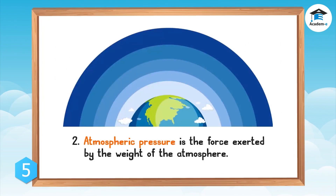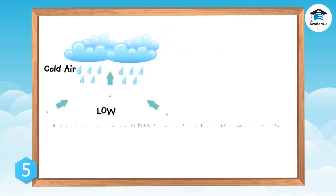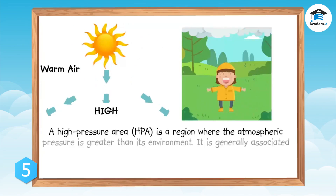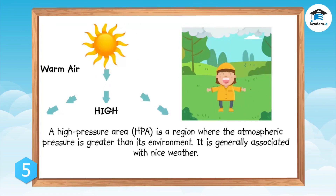Atmospheric pressure is the force exerted by the weight of the atmosphere. A low pressure area (LPA) is a region where the atmospheric pressure is lower than that of the surrounding environment — it is generally associated with rainy weather. A high pressure area (HPA) is a region where the atmospheric pressure is greater than its environment — it is generally associated with nice weather.